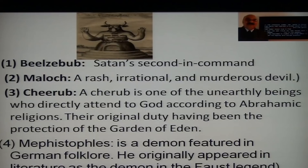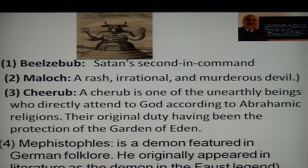Chemos is one of the unearthly beings — not human beings — who directly attend to God according to Abrahamic religions. Their original duty was the protection of the Garden of Eden in which Adam and Eve lived. Mephistopheles is a demon featured in German folklore, who originally appeared in literature as the demon in the Faust legend. You must have read Dr. Faustus, written by Christopher Marlowe.